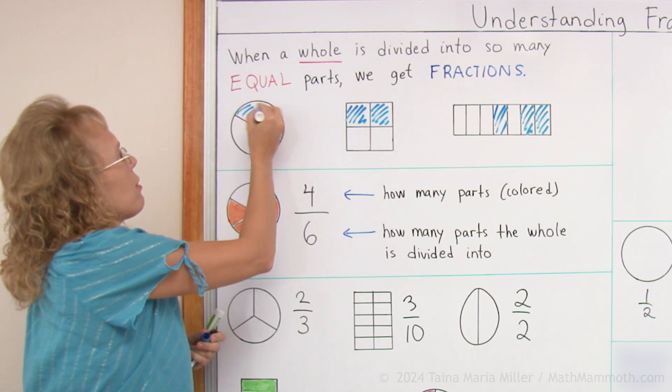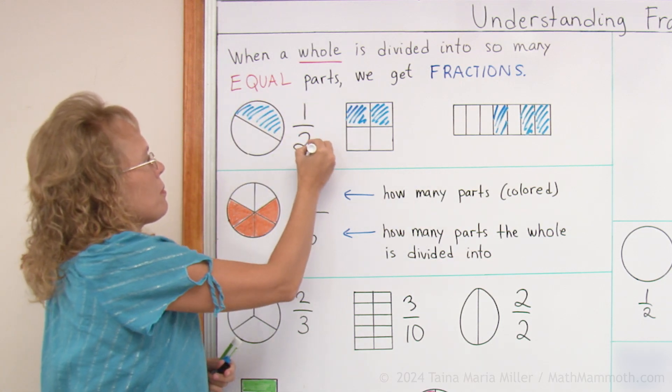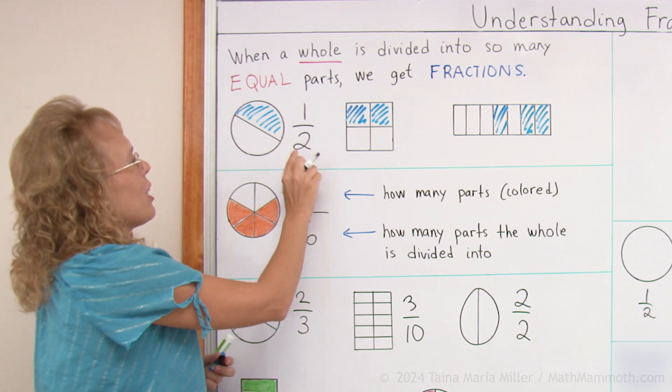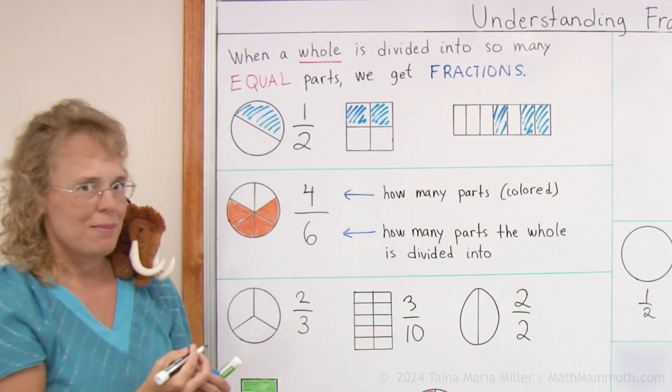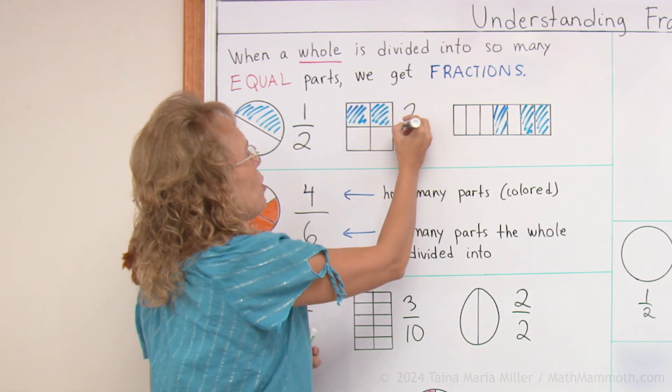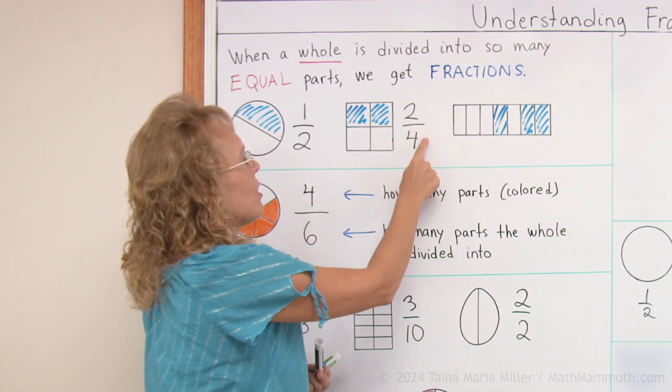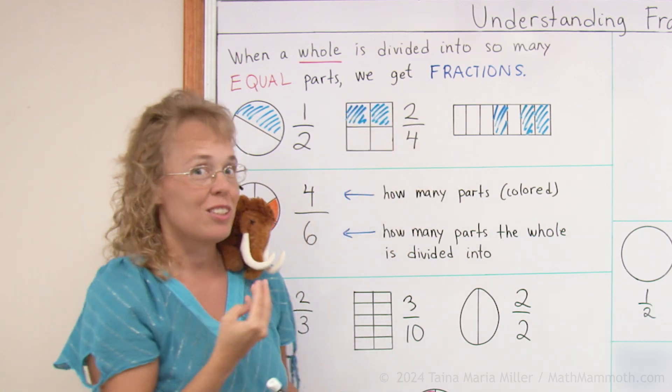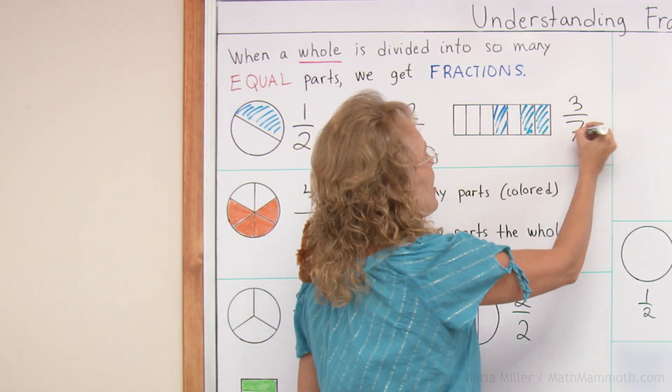Here I was talking about the one half. It's written like this. And that is because we have two parts in total. It is divided into two equal parts and a colored one. And here two fourths, like that. There are two parts that are colored and four in total. It was divided into four equal parts. And then three sevenths like that.